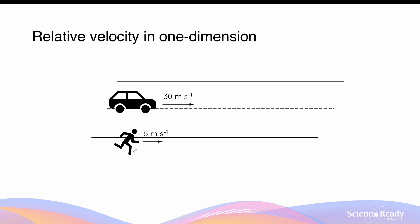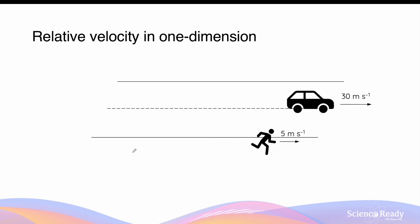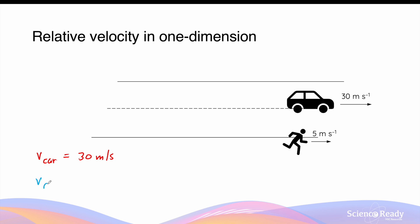Let's say you're running on the side of a road at 5 meters per second, while a car is travelling in the same direction at 30 meters per second. Because you're travelling in the same direction as the car, the velocity of the car observed by you will seem to be slower than 30 meters per second. This velocity measured by you — the runner — is called the relative velocity. The velocity of the car is 30 meters per second, while the velocity of the runner, that is the observer, is 5 meters per second.